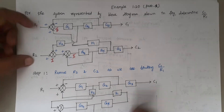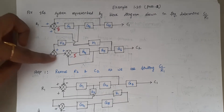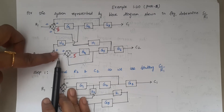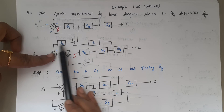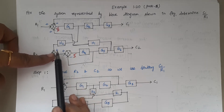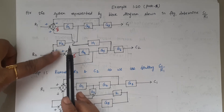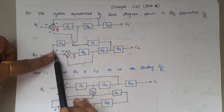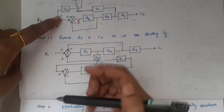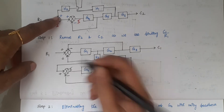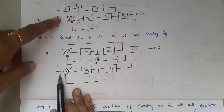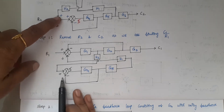In Step 1, I am removing R2 — that is, this summing point gets removed. When this summing point is removed, I am left with H2, which is connected with positive feedback. So I can simply remove the summing point and directly connect H2 to summing point 2 with a plus sign, because it was connected with a plus sign.